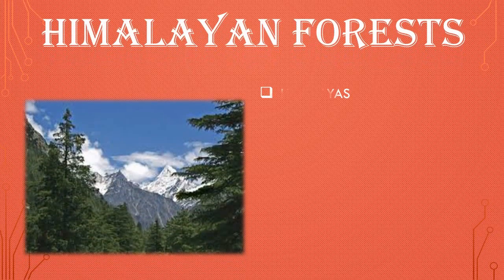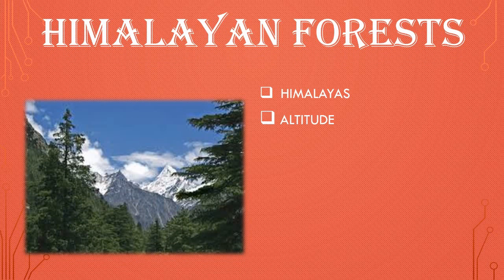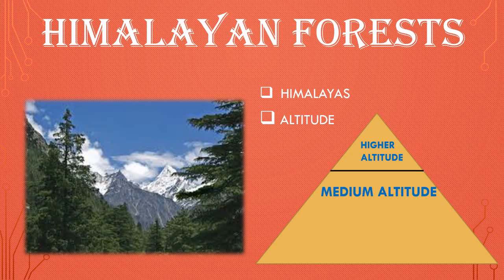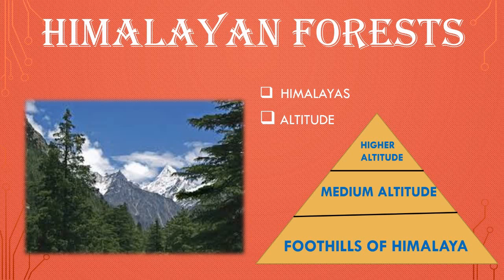In the Indian Himalayas, three types of forests are found based on altitude: higher altitude, medium altitude, and foothills of the Himalayas. The forests of the Himalayas are found on the basis of altitude — higher altitude, medium altitude, and foothills of the Himalayas — also known as mixed vegetation.